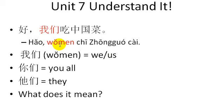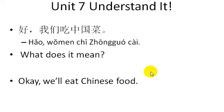So 我们 means we or us. So, 好,我们吃中国菜. Pause if you want to think about the meaning of that. Okay, we'll eat Chinese food.